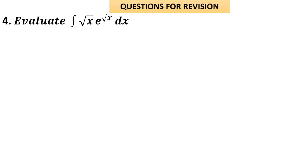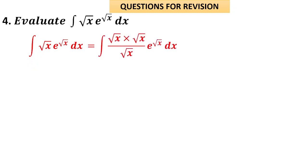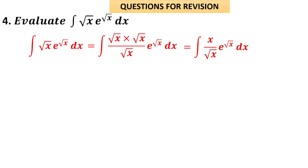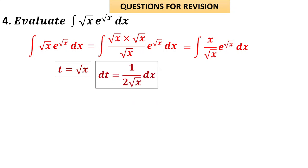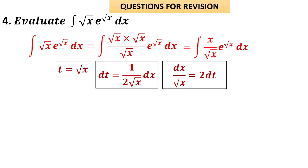Problem 4: integral of e^(√x) dx. This can be solved by substitution after multiplying and dividing by √x, making it (x/√x)·e^(√x), where the derivative of √x is inside. Let t = √x, then dt = (1/(2√x)) dx, so dx/√x = 2 dt. Also, x = t².